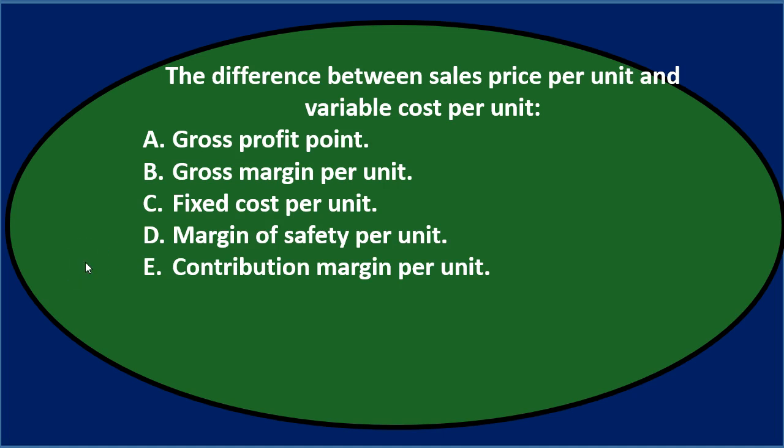The difference between sales price per unit and variable cost per unit. A. Gross profit point. B. Gross margin per unit. C. Fixed cost per unit. D. Margin of safety per unit. E. Contribution margin per unit.